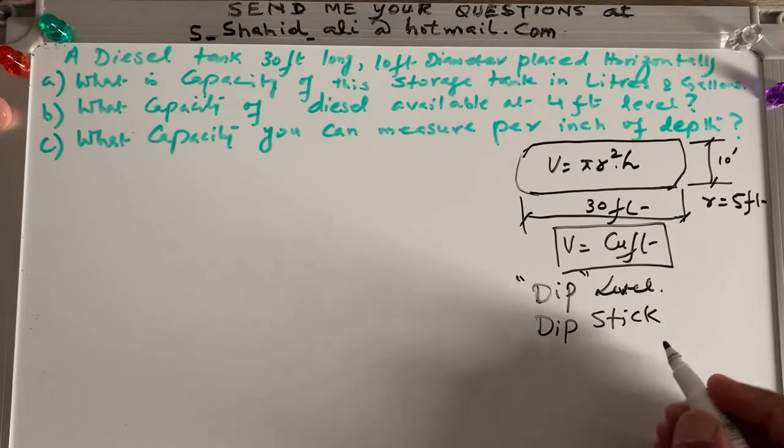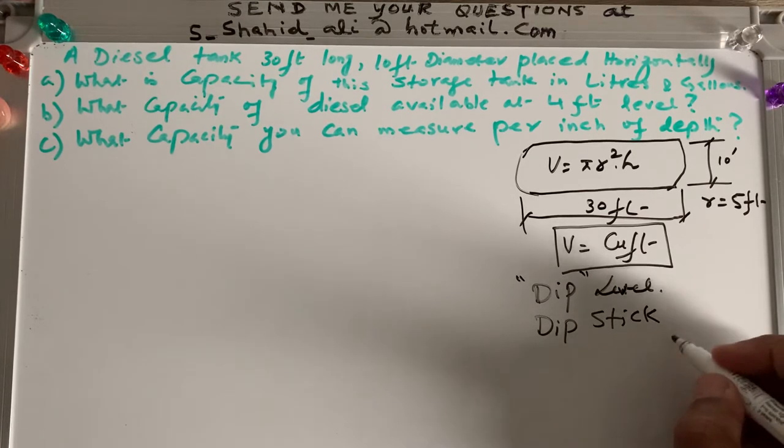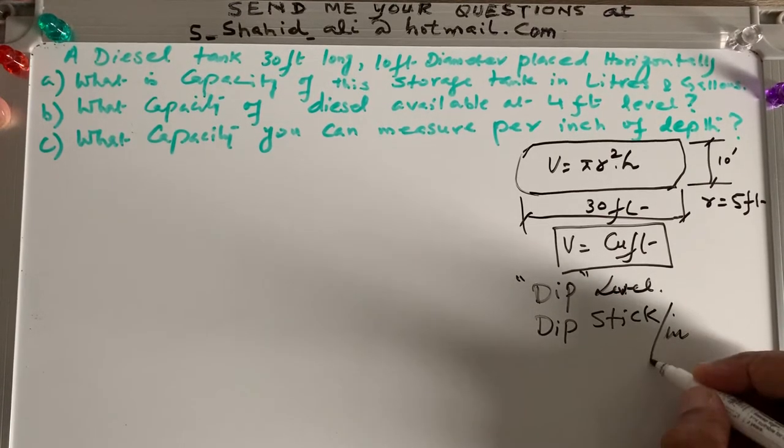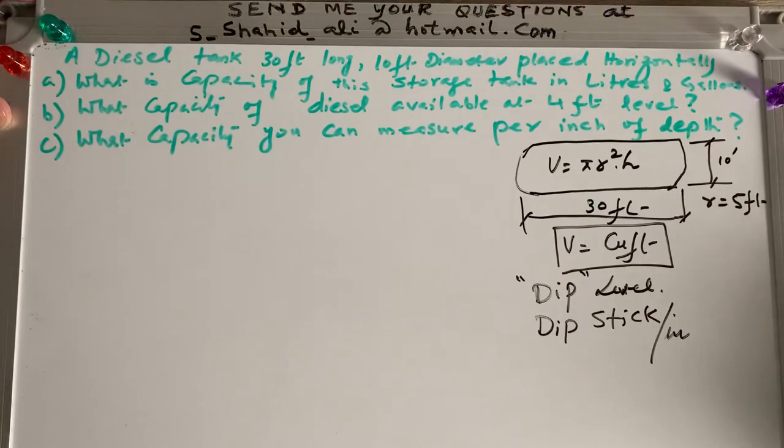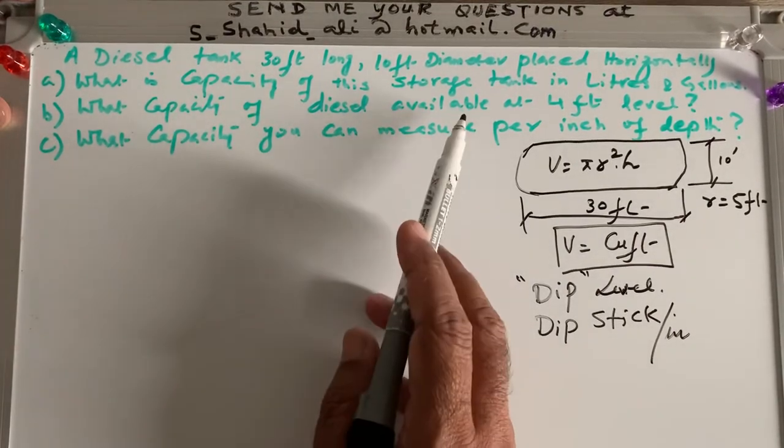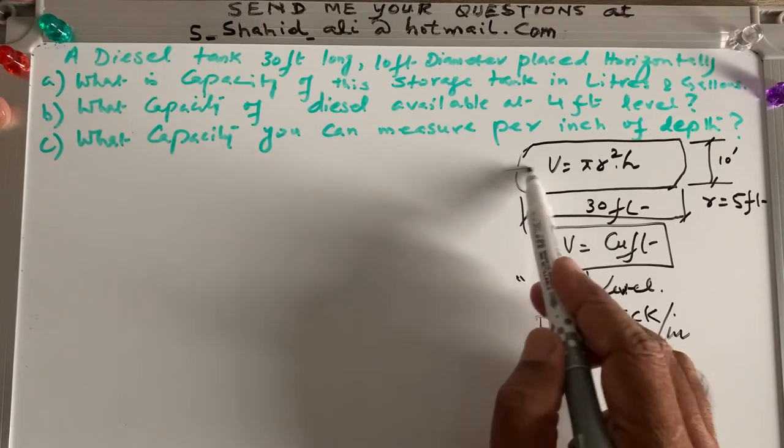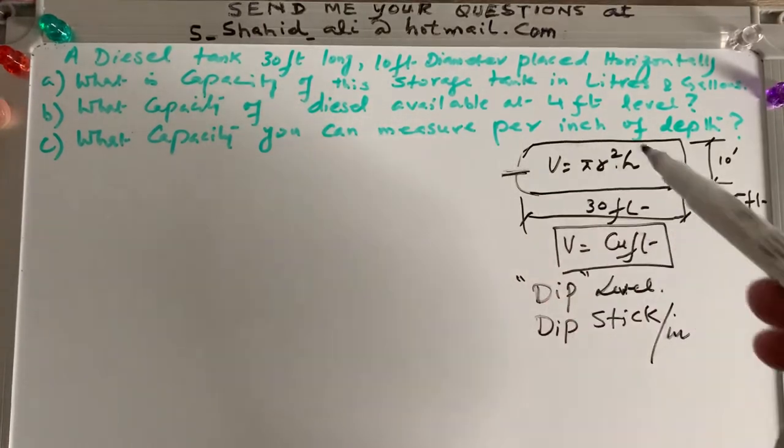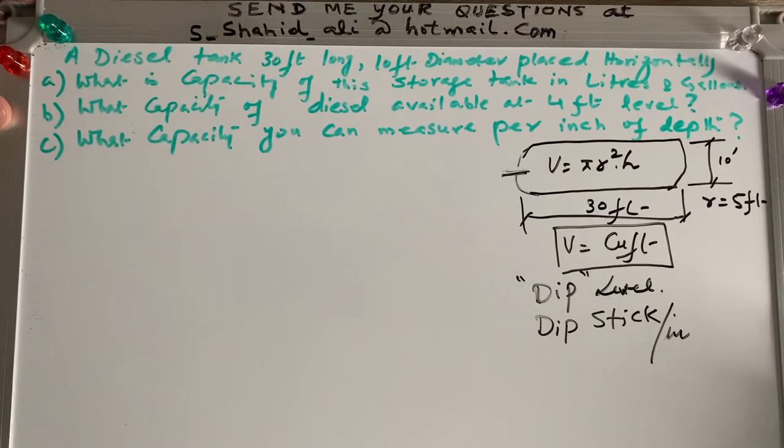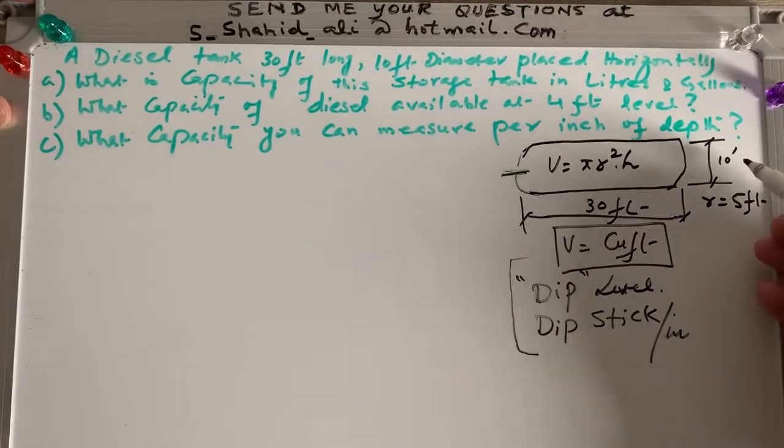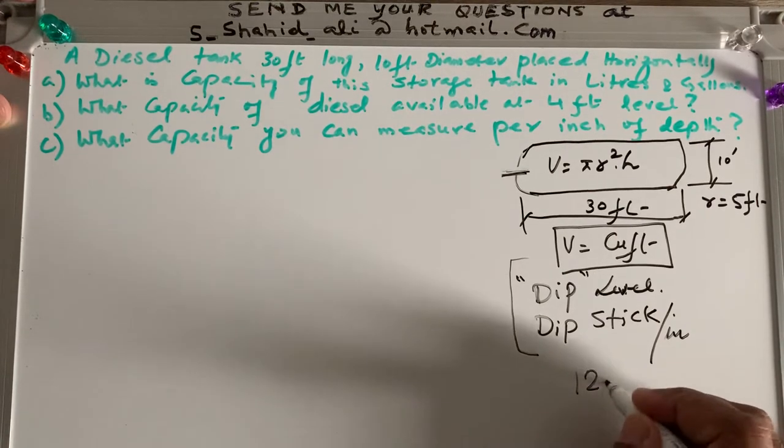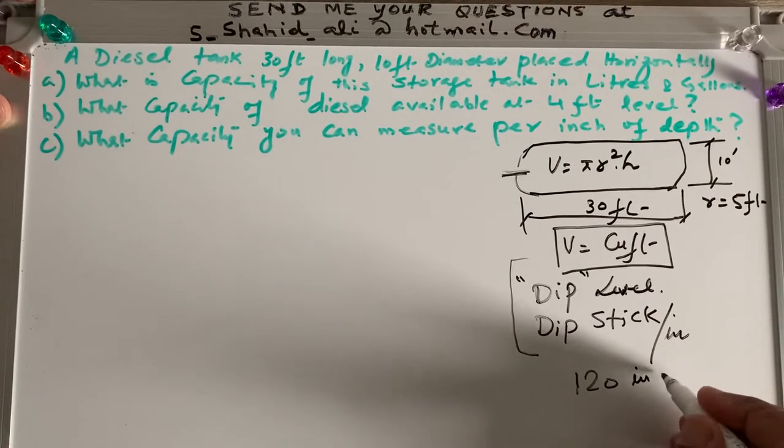That is dip level or dipstick and that stick is called dipstick. So this is everyday example where we are facing in industry. So dipstick is sometimes like it is per inch of depth of the tank, per inch. So we will also calculate the same because he is saying what is the capacity of the storage tank in liters and gallons.